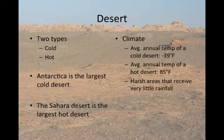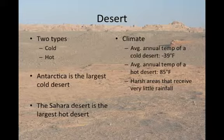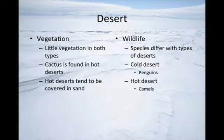The last of the terrestrial biomes is the desert biome. There are two types of desert biomes: the cold desert and the hot desert. Antarctica is the largest cold desert and the Sahara desert is the largest hot desert. The average annual temperature of a cold desert is about negative 39 degrees Fahrenheit, while the average annual temperature of a hot desert is about 85 degrees Fahrenheit. Deserts are known for harsh areas that receive very little rainfall. As you can see by this background image, deserts are not necessarily hot. There is very little vegetation that grows on both types of deserts. Cactus and sand can be found in hot deserts, while cold deserts have animals such as penguins and hot deserts have animals such as camels.